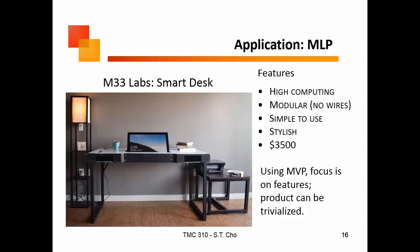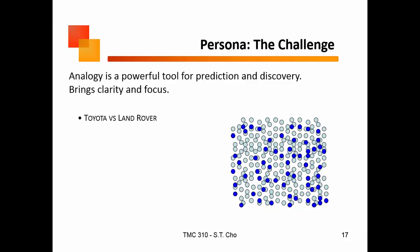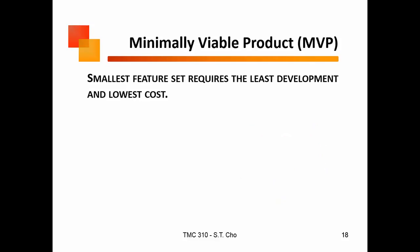That's the problem: when you get into a conversation about price, your product can get trivialized pretty quickly. When M33 realized what they needed to do, they had to think about analogy — they're not selling Toyotas, they're selling Land Rovers. They needed to use that kind of approach: a high-end, classy product. What it comes down to is you can target your audience, but you need to figure out whether your market is going to be large enough to make money.